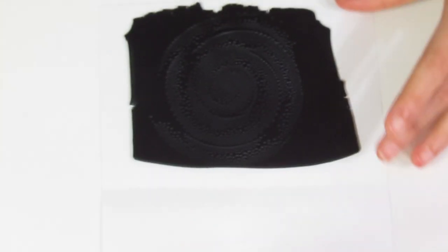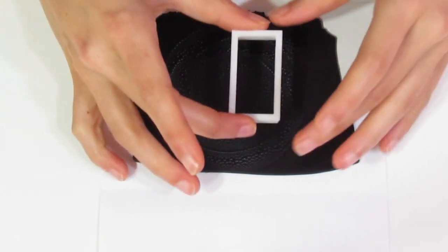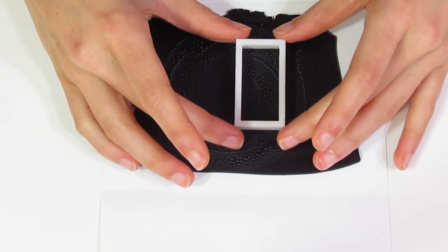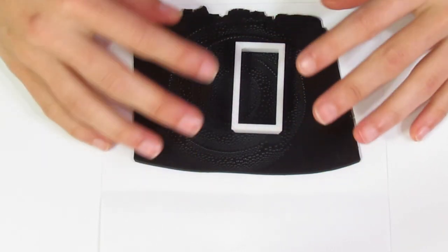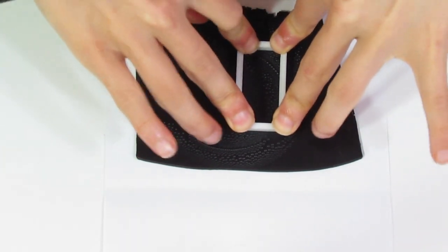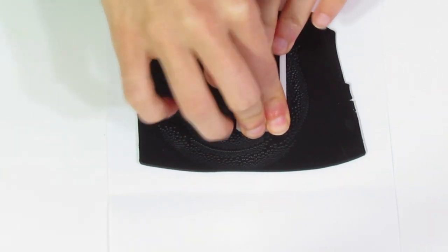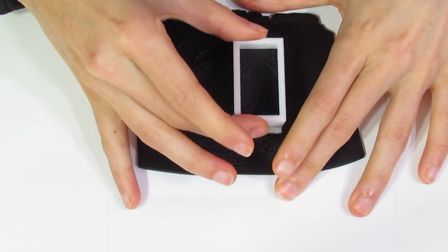Keep it facing that side down. Grab a cutter of your choice. I'm going to be using a rectangle cutter today. Well, this is actually my half square cutter. I'll have a link to that in the description below, and you're just going to cut it out.